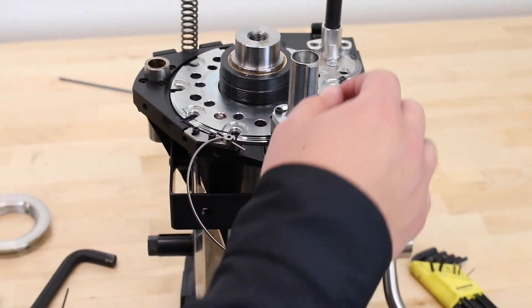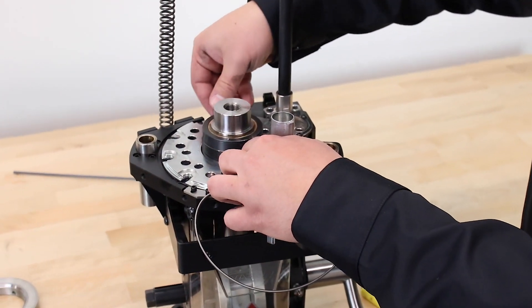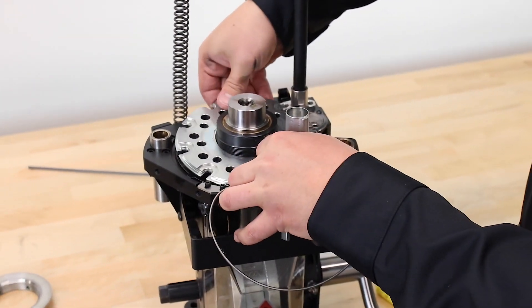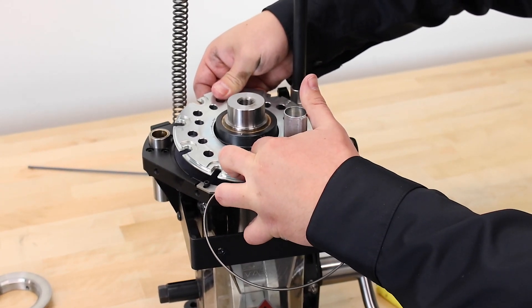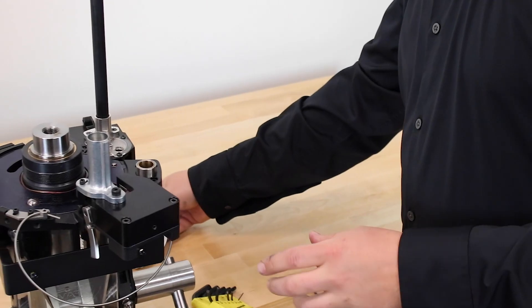Now what you're going to do is freehand, you're going to pull the case feed ram back and simply pull your shell plate up and out and set it aside.